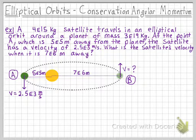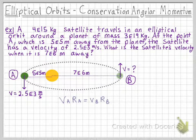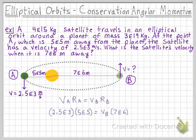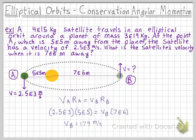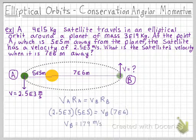We can use our conservation of momentum equation that we developed on the previous slide, and we know our radius and velocity at point A, and we know the radius at point B, and we're just missing that velocity at point B. And we can solve, and we see that the velocity at point B is 179 meters per second, which is much slower than the velocity at point A, which makes sense, because the further away from the planet, the slower the object is going to be traveling.